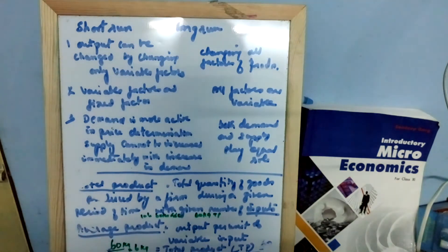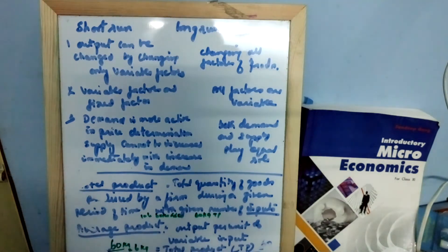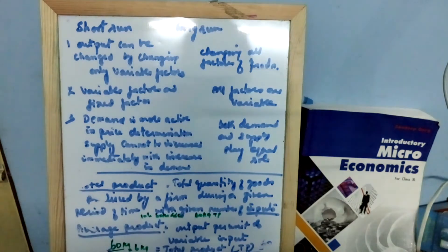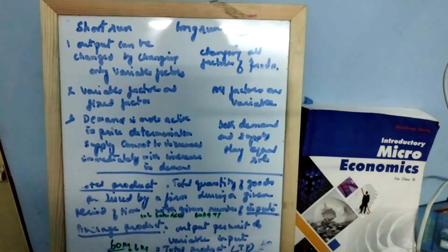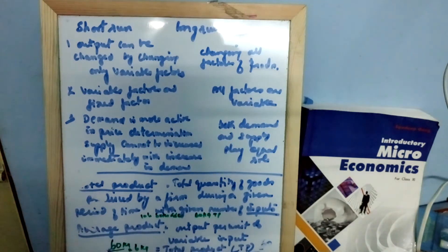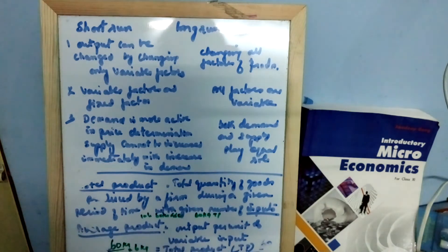Now let's see what are variable factors. Labor and raw materials are variable factors. Land, machinery, and equipment are fixed factors. So in short run, output can be changed by changing only variable factors. We cannot change the factory site, the factory itself, or the machinery.